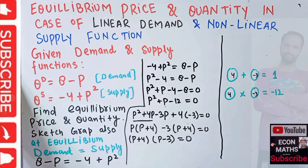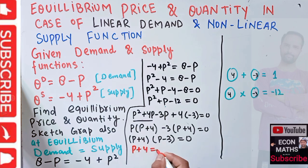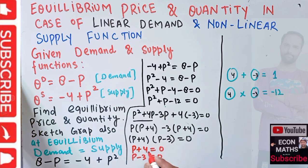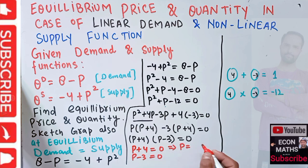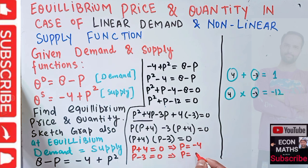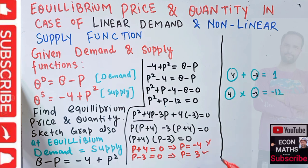This means either P + 4 = 0 or P - 3 = 0. If P + 4 = 0, then P = -4. If P - 3 = 0, then P = 3. Obviously price cannot be negative, so we take the positive price P = 3.